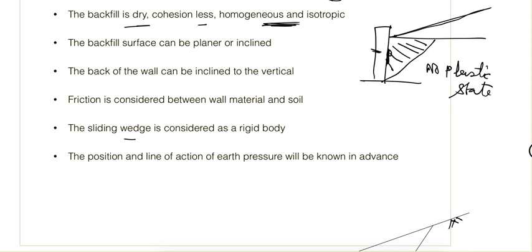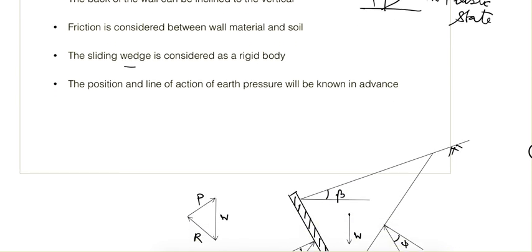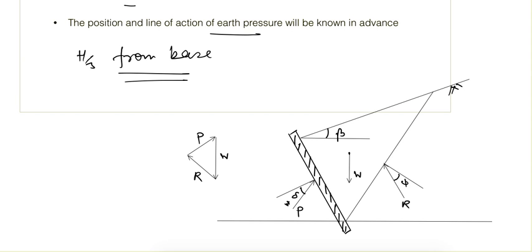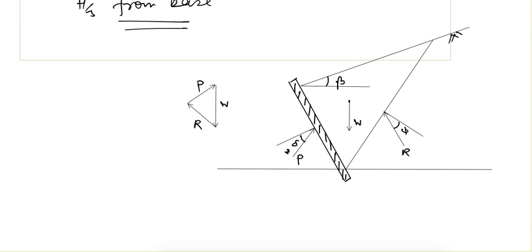The position and line of action of earth pressure are known in advance. It is assumed that the earth pressure acts at H/3 from the base. We also know the angle of friction between the wall and the soil (delta), so using that, the location of earth pressure is known.